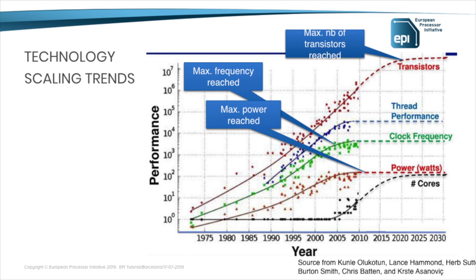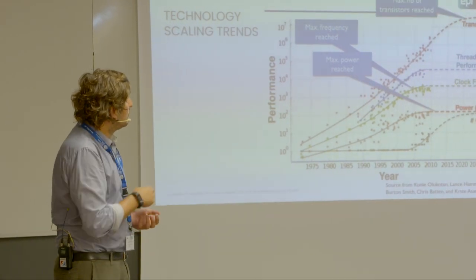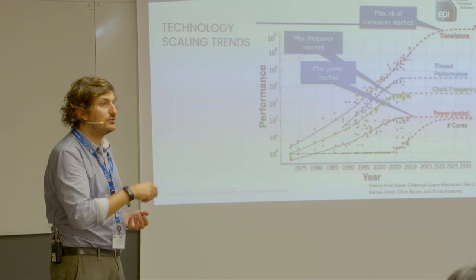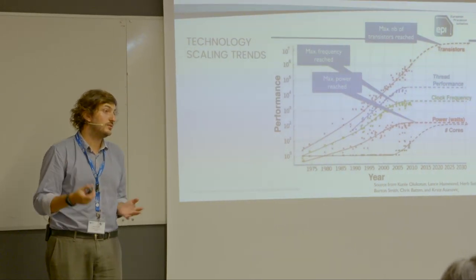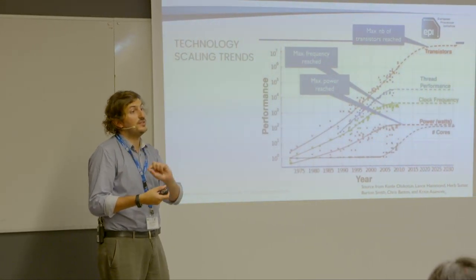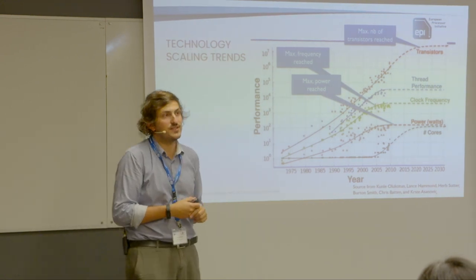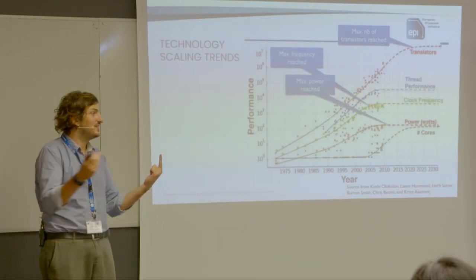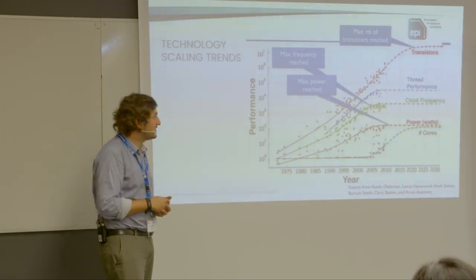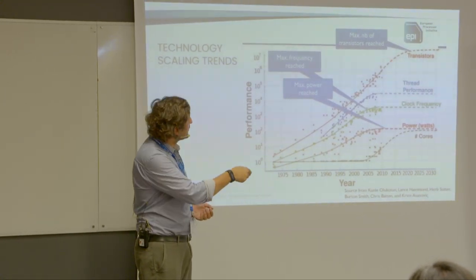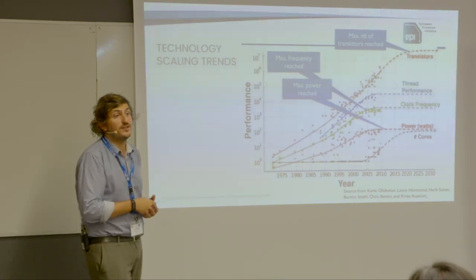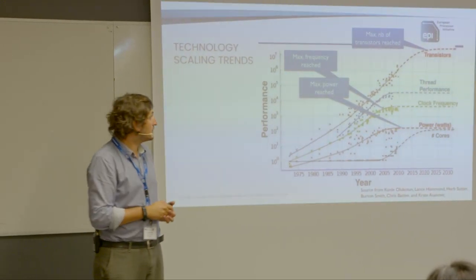We are also approaching the end of Moore's Law — we cannot indefinitely shrink transistor size since we need at least one atom inside each transistor, and we are saturating the number of transistors available per silicon reticle. So we are reaching fundamental physical limits on both frequency and transistor density.